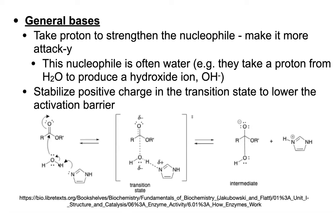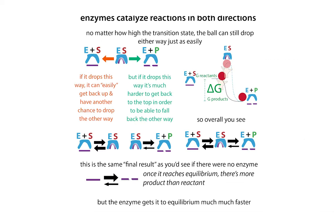By having the general base steal the proton, you're stabilizing the positive charge that would be building up in the transition state, and this lowers the activation barrier. That's how enzymes catalyze reactions — by lowering the activation energy to get to the hardest part of the reaction. The enzyme can't change whether or not the reaction is thermodynamically favorable; it just makes it faster. Like making the top of the rainbow shorter — but if the pot of gold is still high up on the other side, it would also be easier to go back, because the reverse is also catalyzed.